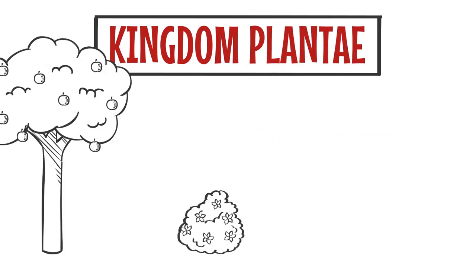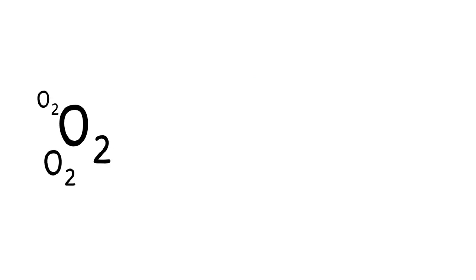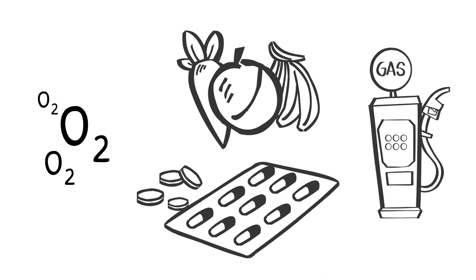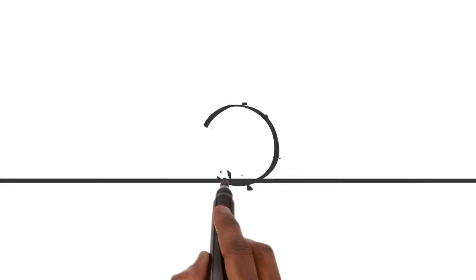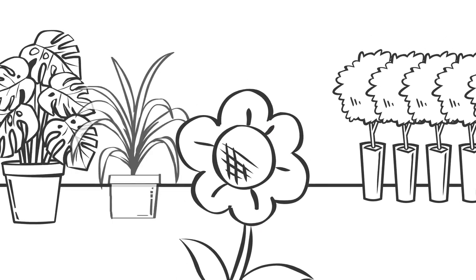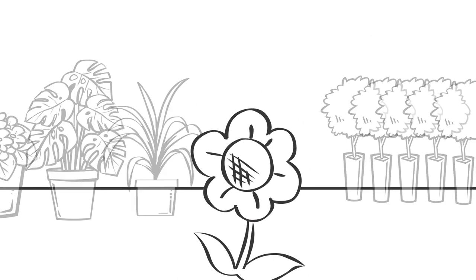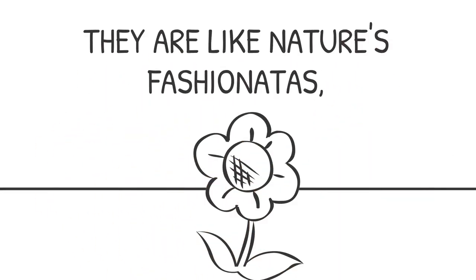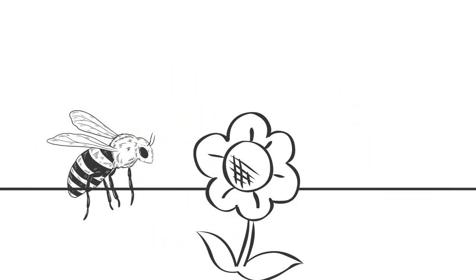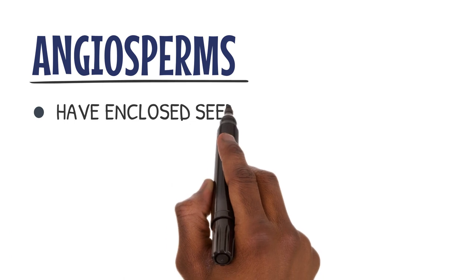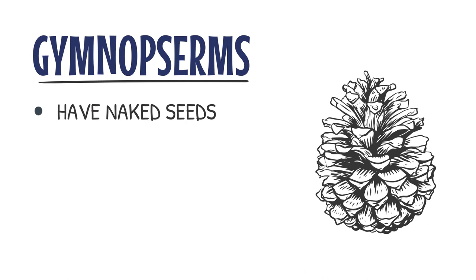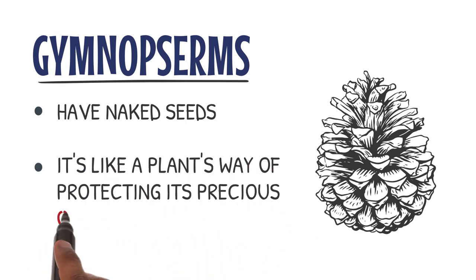The Kingdom Plantae includes the plants. They provide us with oxygen, food, and so much more. Now, let's get to know one of the plant groups out there — the Angiosperms. Picture a beautiful flower blooming in a garden; that's a typical flowering plant. They are like nature's fashionistas, flaunting their vibrant petals to attract pollinators like bees and butterflies. Angiosperms have enclosed seeds, like those found in fruits, while Gymnosperms have naked seeds, like those on a pine cone.